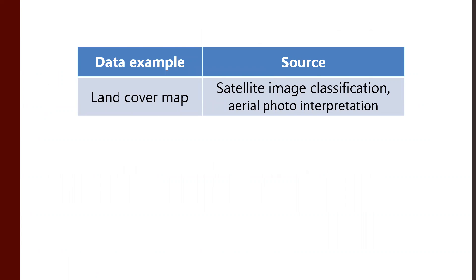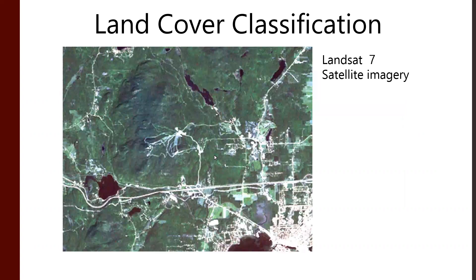One common piece of data everyone likes to use is a land cover map. In my years of teaching, I've found this to be a very popular, in-demand data type. Often these emerge from satellite images or aerial photos. We have all these satellite platforms out and about — take a remote sensing class if you want to learn more. These satellites are collecting imagery information: sometimes as false colors, sometimes as visual bands, sometimes as infrared bands — all this spectral energy data.